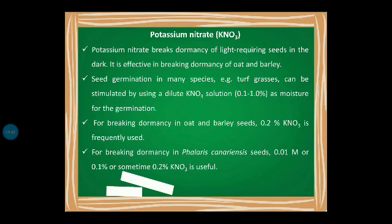For breaking down dormancy in oat and barley seeds, 0.2 percent of KNO3 is frequently used. The concentration for tough grasses is 0.1 to 1 percent.